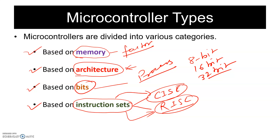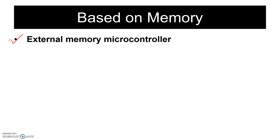Based on memory, microcontrollers are classified into two classes: the first is external memory based microcontroller, and the second is embedded memory based microcontroller. In the external type, memory is attached externally to the microcontroller.